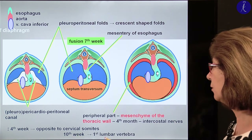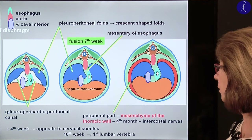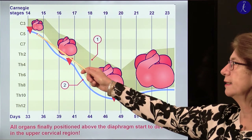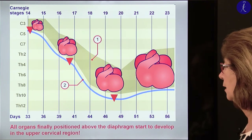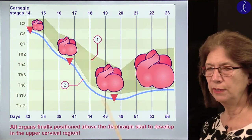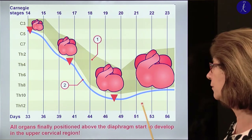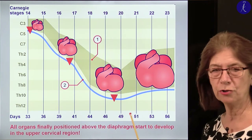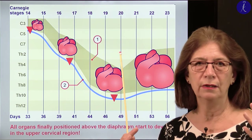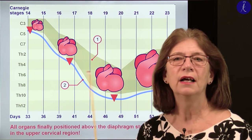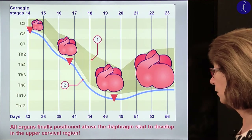The origin of the diaphragm will be at about the level of the first lumbar vertebra — it descends, and so does the heart. Think of it: all organs which are finally positioned above the diaphragm start to develop in the upper cervical region. That means the lungs, the heart, the thymus, the larynx, the thyroid, and all these organs are descending from the cervical region.